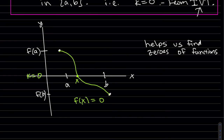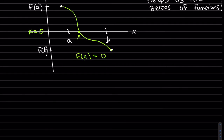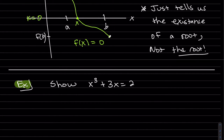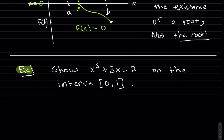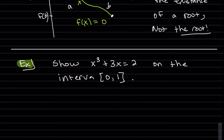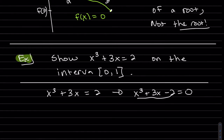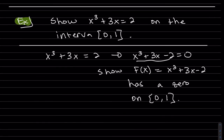Do be careful — it does just tell us the existence of a root, not the solution itself, not the root itself. But we could use it to approximate the solution, as you'll see in my second example. So we want to show x³ + 3x = 2 has a solution on the interval [0, 1]. If we get zero on one side, then this could be our function, because we want to show f(x) equals zero. So we can use the Intermediate Value Theorem to do that.